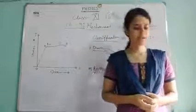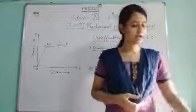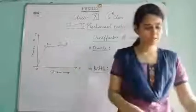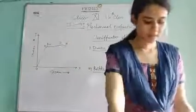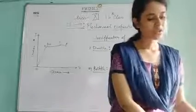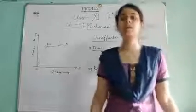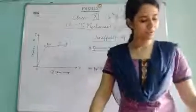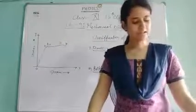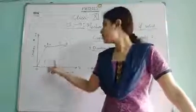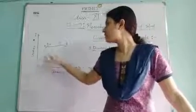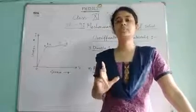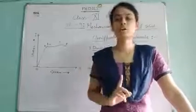Good morning class 11 students. In our last class we discussed the stress-strain relationship with the help of one experimental setup, and from that section we saw that the stress-strain graph has this kind of nature where OA represents the straight portion of the graph where Hooke's law is obeyed.